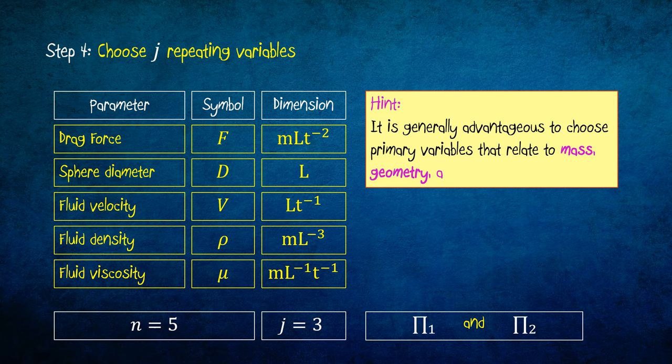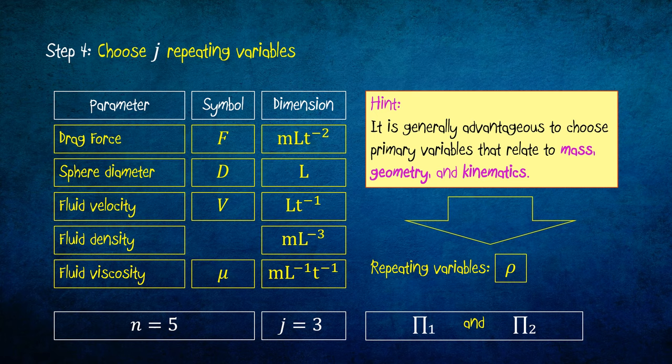Among these parameters, the one that is related to mass is the fluid density rho. The one which is related to geometry is the sphere diameter d. And the one which is related to kinematics is the fluid velocity v. Hence, the three repeating variables are rho, d, and v.